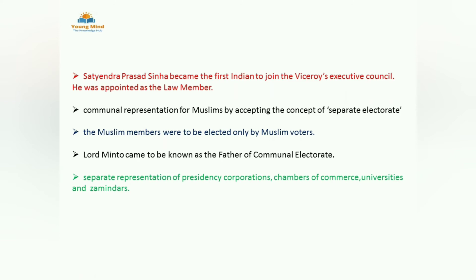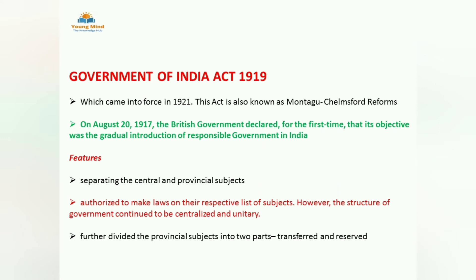Next we move to the Government of India Act 1919. From here, Indians got the power of administration slowly. It came into force in 1921 and is also called the Montagu-Chelmsford Reforms. In 1917, the objective of the government was introduced — a gradual change to a responsible government in India. The first step was separating central and provincial subjects: society-related issues like education and development came under the provincial list, while the main subjects beneficial for the British came under the central list. They were authorized to make laws on their respective list of subjects.